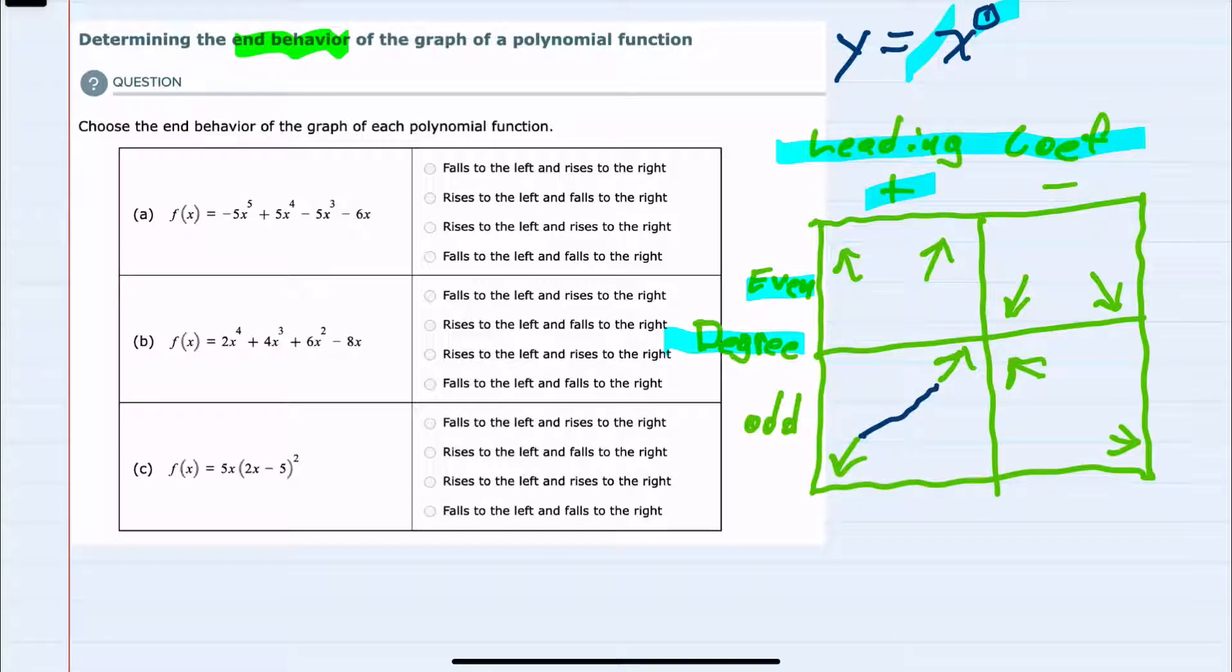So that's our odd degree positive leading coefficient. If I make that y equals negative x, then that is going down from left to right. And again, that's an odd degree and a negative coefficient.